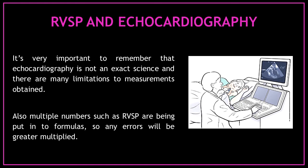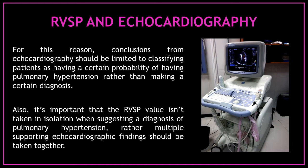It's very important to remember that echocardiography is not an exact science and there are many limitations to measurements obtained. Also, multiple numbers such as right ventricular systolic pressure are being put into formulas, so any errors will be greater multiplied. For this reason, conclusions from echocardiography should be limited to classifying patients as having a certain probability of having pulmonary hypertension rather than making a certain diagnosis. Also, it's important that the right ventricular systolic pressure value is not taken in isolation — rather, multiple supporting echocardiographic findings should be taken together.